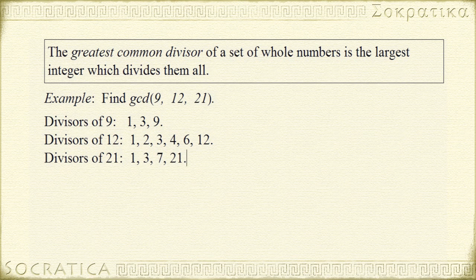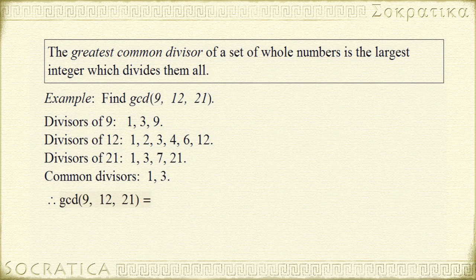So the common divisors are 1 and 3. Therefore, the greatest common divisor of 9, 12, and 21 is 3.